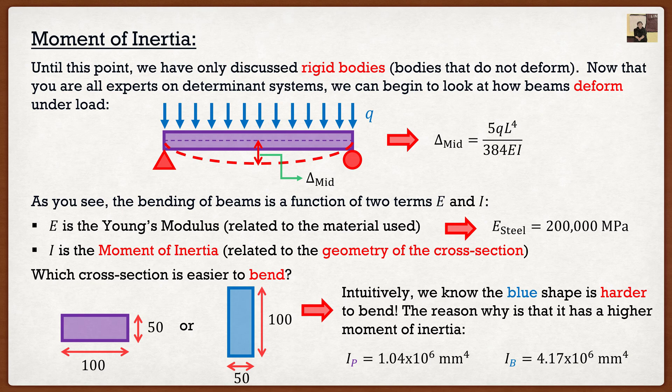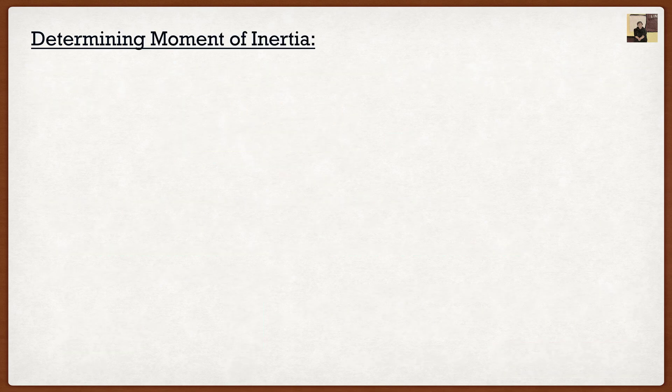If we were to compare the two, we can see that the blue one is around four times as much as the purple one. So we can see that the math actually checks out. Intuitively, we know it checks out. But how exactly do we calculate this moment of inertia?